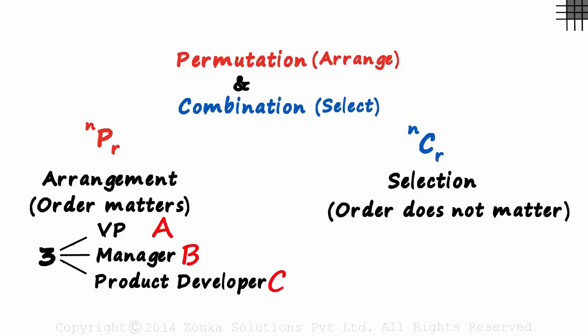If we select A, B and C, then it can be a case of VP, Manager, Product Developer. Or maybe A is chosen as a Product Developer, B as Vice President and C as a Manager. Each case is different.